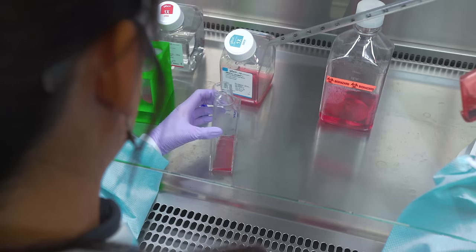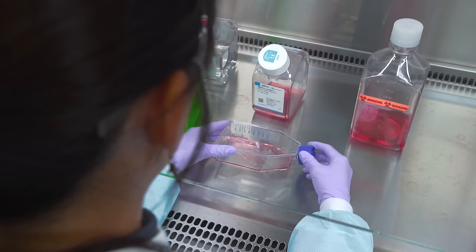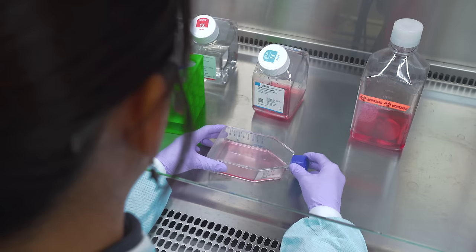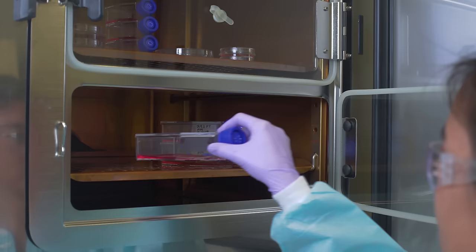Cap the vented caps on your flask tightly. If the caps are not vented, cap loosely. This keeps contamination out while allowing adequate gas exchange. Use a north-south-east-west motion to evenly distribute the cells and transport the flasks to the incubator.